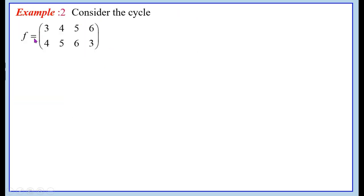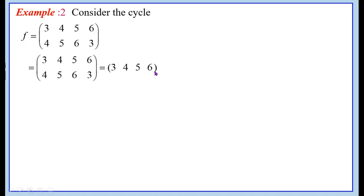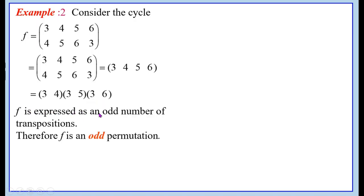Consider the permutation f with top row 3, 4, 5, 6 and bottom row 4, 5, 6, 3. This can be written as the cycle (3, 4, 5, 6): 3→4, 4→5, 5→6, 6→3. Now, this can be written as a product of transpositions: (3, 4)(3, 5)(3, 6). That is, f is written as a product of 3 transpositions. Since 3 is an odd number, f is expressed as an odd number of transpositions. Therefore f is an odd permutation.